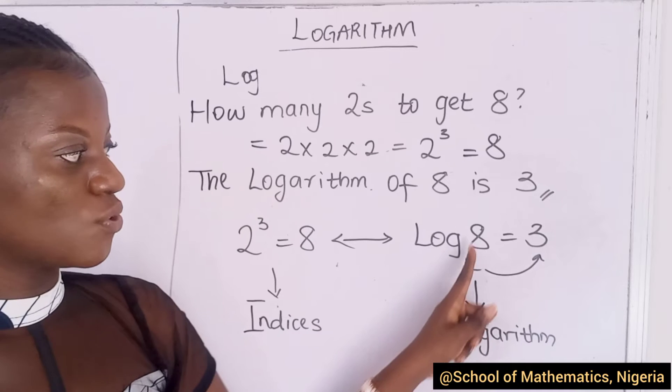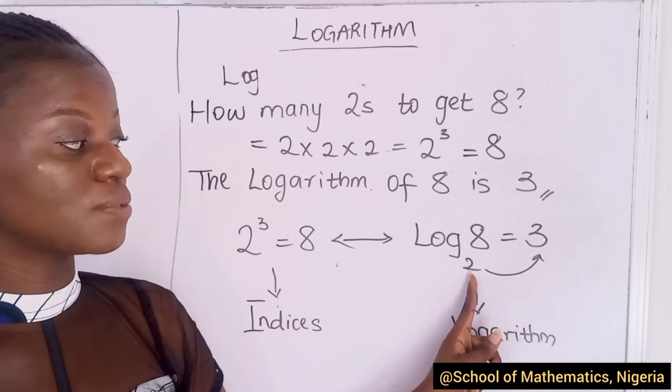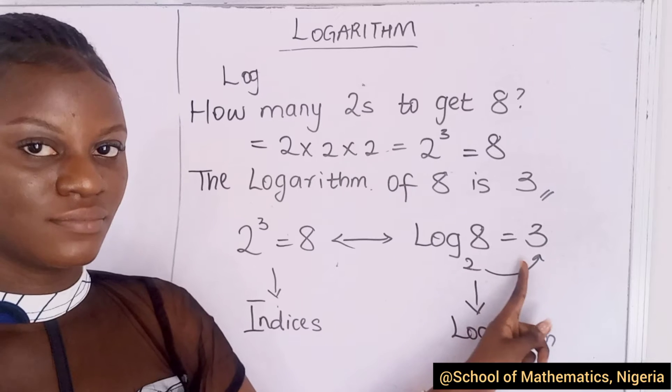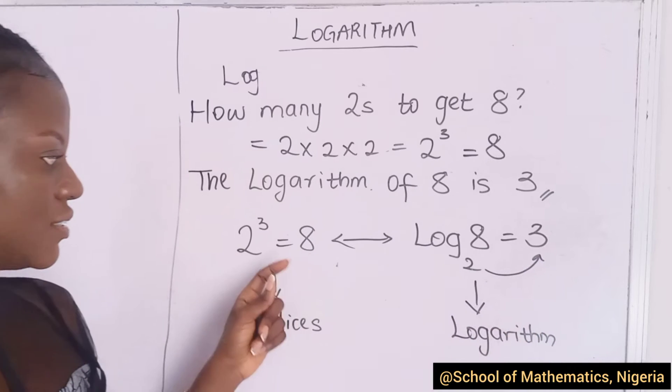Do you see why we had to treat index or indices before treating logarithm? Log to base two of eight is three. That is, how many times do we have to multiply two to get eight? Three times. Same here.